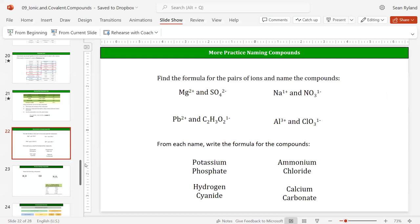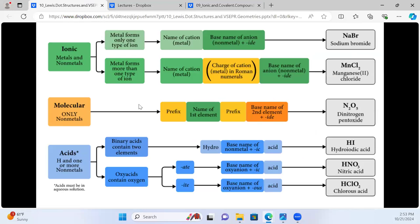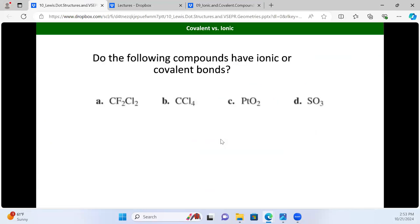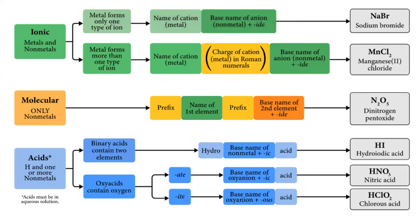One last note about nomenclature before we get to more interesting things. Nomenclature is not anybody's idea of a good time, but we need to pay attention to it because it's how we can communicate unambiguously. We have ionic nomenclature - say the name of your cation, say the name of your anion. Molecular compounds are covalent compounds.